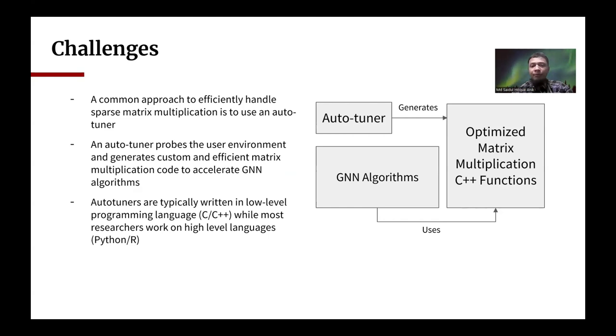But there is one problem. The autotuner usually generates high performance code in low-level languages such as C or C++ which is not common among researchers who work with graph neural networks, at least not as common as Python or R.